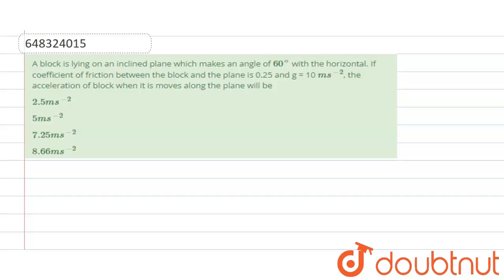Hello students, here the question is: a block is lying on an inclined plane which makes an angle of 60 degrees with the horizontal. If the coefficient of friction between the block and the plane is 0.25 and g is equal to 10 meter per second square, then the acceleration of the block when it moves along the plane will be. So here we have to find out the acceleration when it moves along the plane.